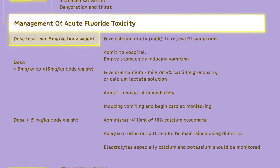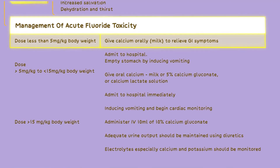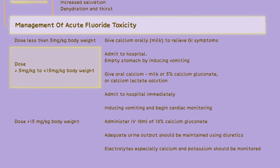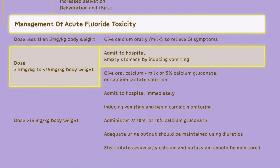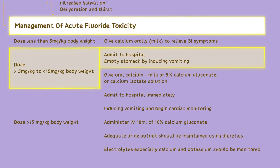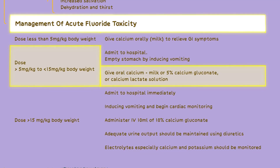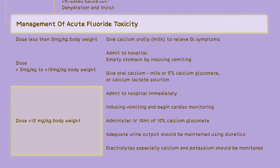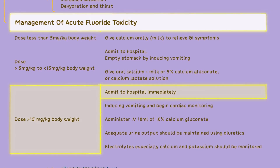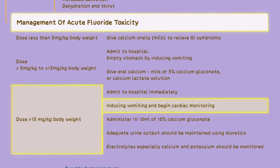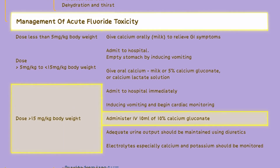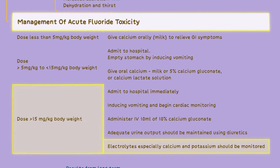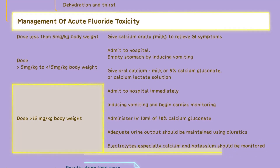For a dose less than 5 mg per kg body weight, give calcium orally such as milk to help relieve gastrointestinal problems. For a dose greater than 5 mg per kg but less than 15 mg per kg body weight, admit the individual to the hospital for close monitoring, induce vomiting, and begin cardiac monitoring. Administer intravenous calcium gluconate, typically 10 ml of 10% calcium gluconate. Maintain adequate urine output using diuretics and monitor electrolyte levels, particularly calcium and potassium.